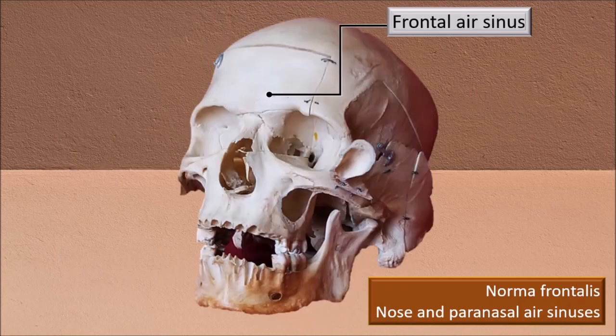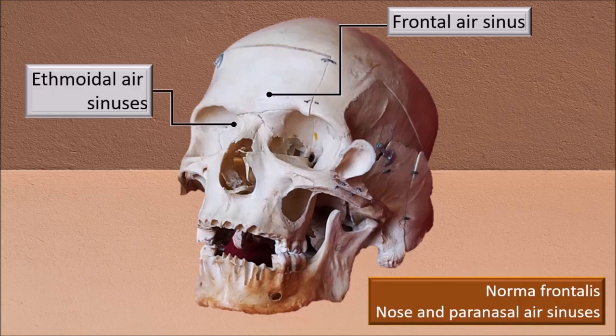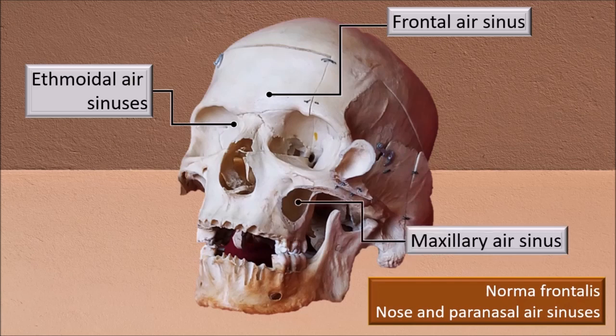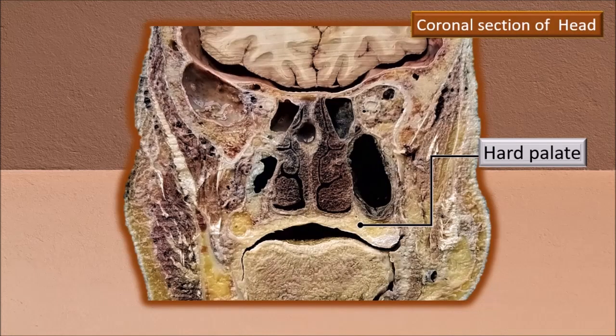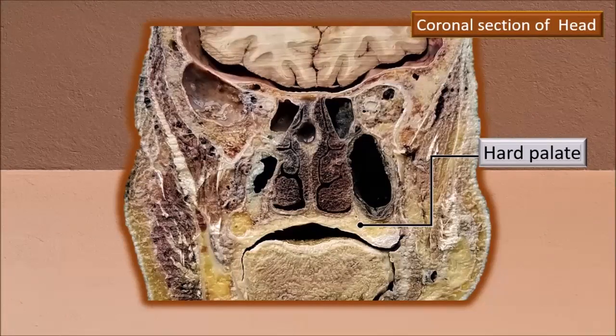Now the frontal sinus is closed, but watch carefully — the maxillary air sinuses are opened out like a window. The location of the ethmoidal air sinus is labeled, and the cavity of the maxillary air sinus is very clearly seen.